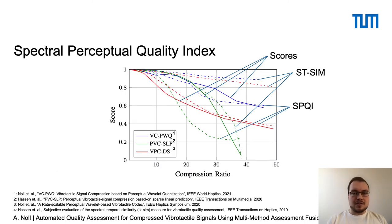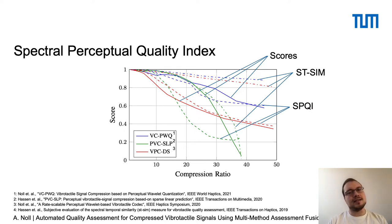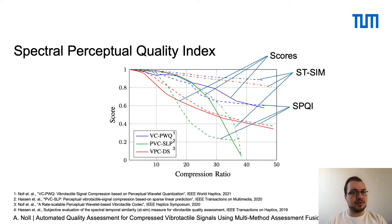The results are very interesting. We see that the SPQi for the blue and red codec are very close to the actual scores, whereas for the green codec it's quite far off. And the state-of-the-art metric so far, which is the ST-SIM, is the other way around — it's very close for one codec and very far away for the other.